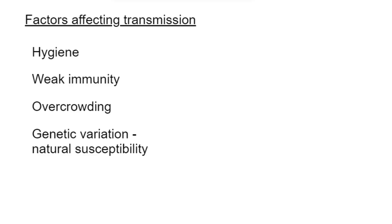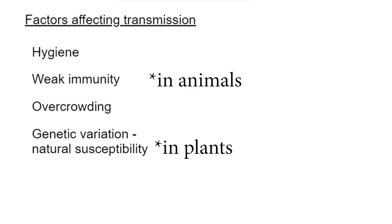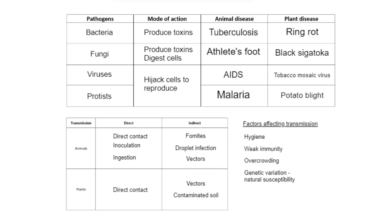Another commonly mentioned factor is genetic variation. Certain organisms have a natural susceptibility to disease — in plants particularly, some are more susceptible to infections whereas others are less susceptible because of their genes. So there you have it — that is a summary of the different pathogens and diseases.